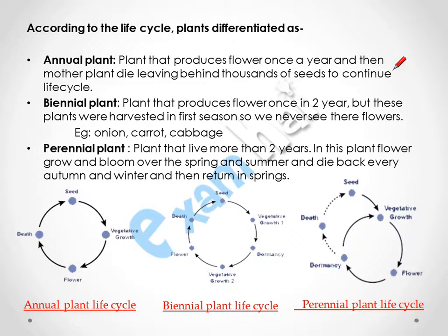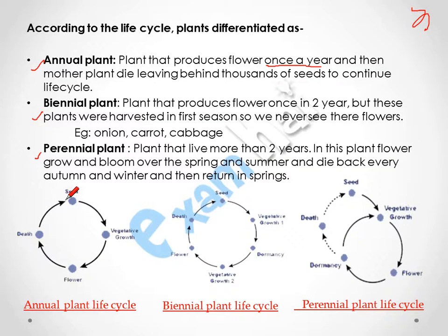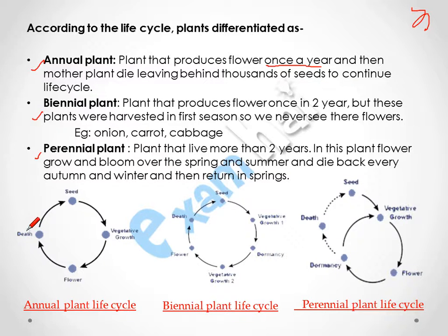According to their life cycle, plants are divided as annual, biennial, and perennial plants. In annual plants, the plant produces flowers once in a year and then the mother plant dies, leaving behind thousands of seeds to continue the life cycle. As you can see in this diagram, the plant produces seeds in the embryonic phase, goes into the vegetative phase and becomes mature, then in the reproductive phase it produces flowers, then enters the senescence phase, dies, and again produces seeds which continue the cycle.